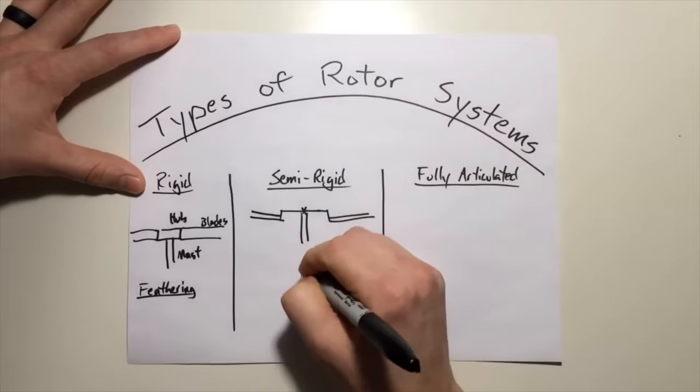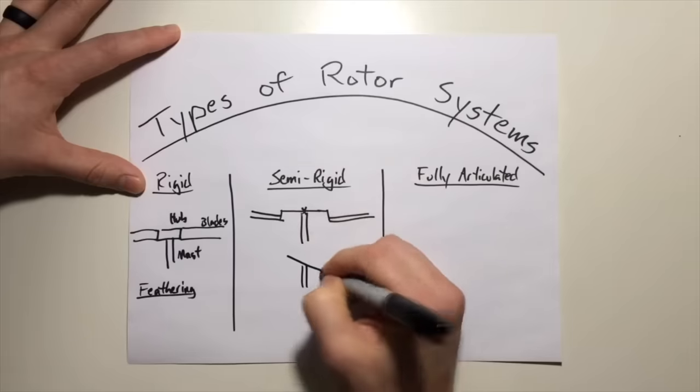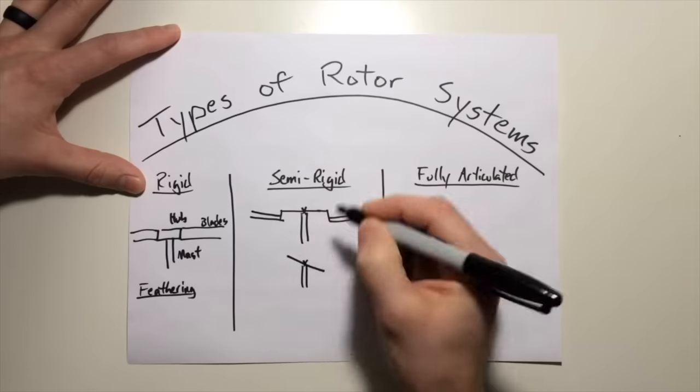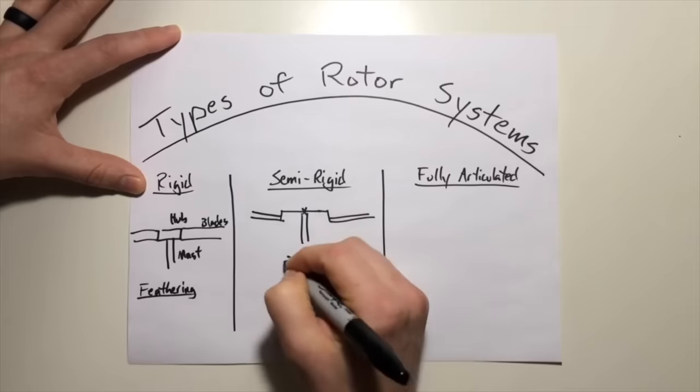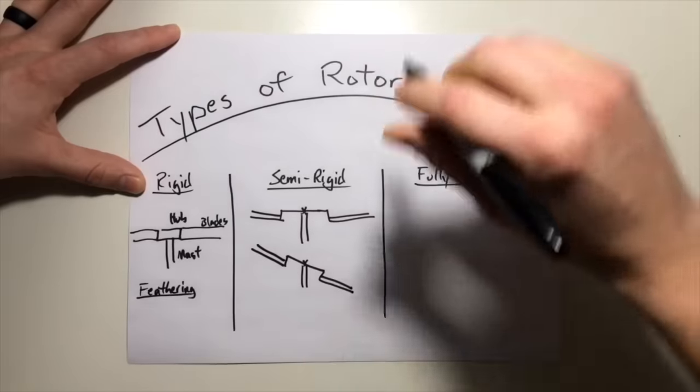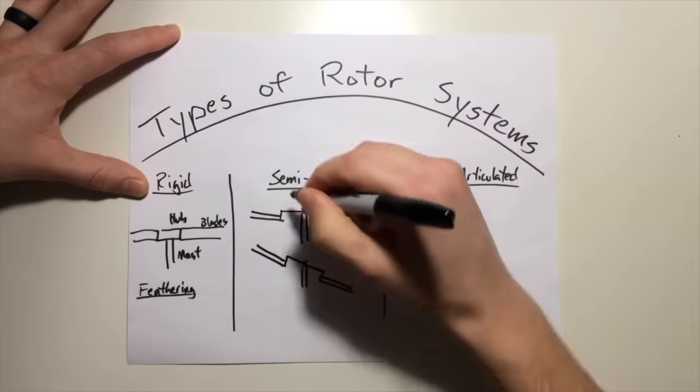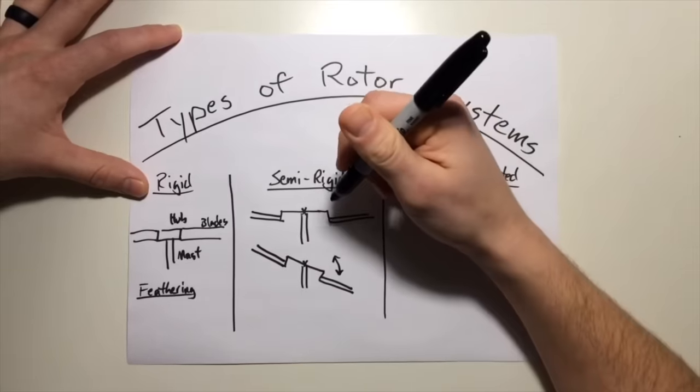So what did that look like? Let's say you wanted to put some kind of cyclic input, the entire system would rock along that horizontal or that flapping hinge and allow the rotor system to absorb the stressors of flight instead of the blade bending up and down, putting the strain on the blade. So now the entire system could pivot along that horizontal joint.